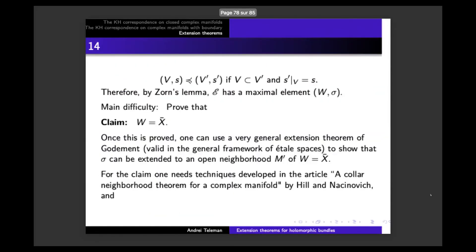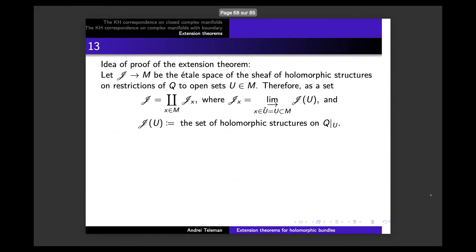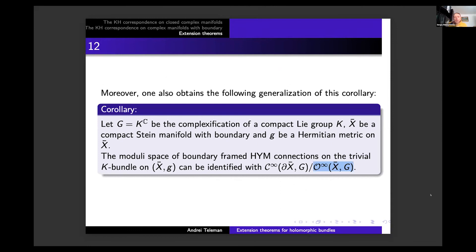Yes — this is the last slide, the general version of the quotient map. The question is: the space of smooth maps from the boundary to G, and the space of formally holomorphic bound maps — they have natural topologies, these are endowed with the quotient topology. The question is: does this quotient map have local sections?